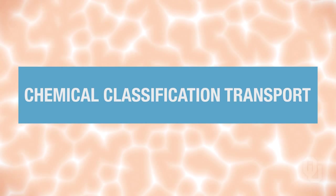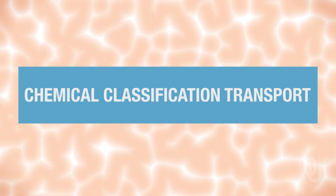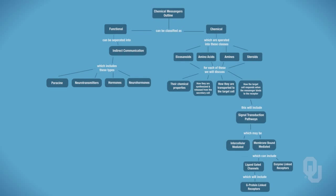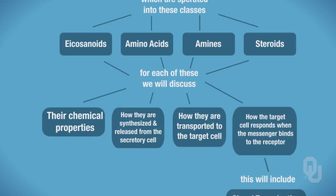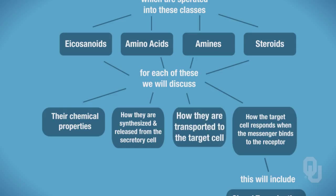We've now moved into transport of our chemical messengers. So what have we done so far? Let me take a look at our outline so that you know where we're going. We've talked about the chemical properties of our chemical messengers. The last video reviewed how our chemical messengers are synthesized and secreted from the secretory cell. Now we want to investigate how those chemical messengers get transported to the target cell.